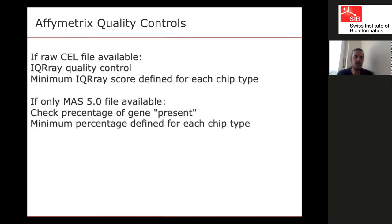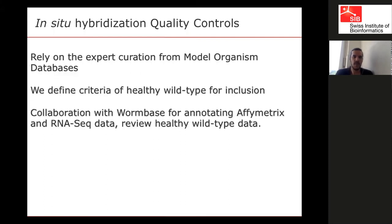For Affymetrix data, we developed our own quality metric called IQRArray, which is published, and which outperforms existing quality control methods. We use that quality score when we have access to raw CEL files. If we have only processed MAS files, we use metrics such as the percentage of genes considered present — for each chip type, we define a minimum percentage. If only 5% of genes are considered present on a chip, something is wrong because a cell cannot function with only 5% of genes expressed.